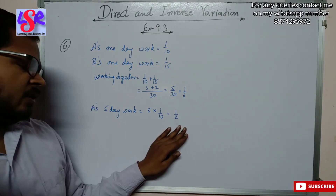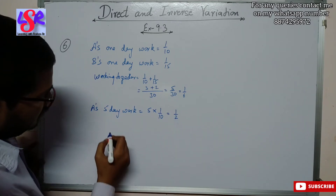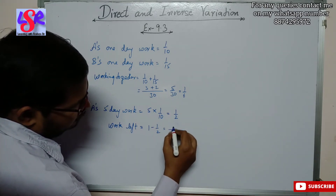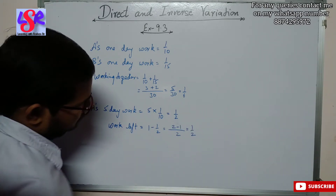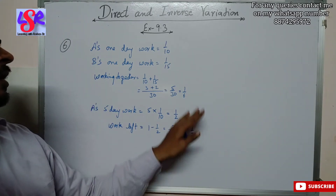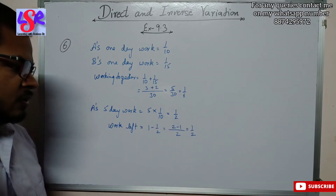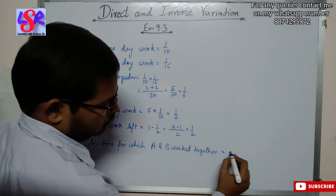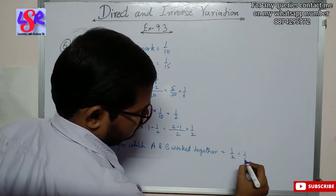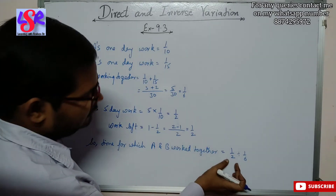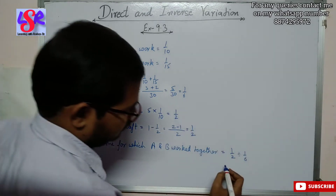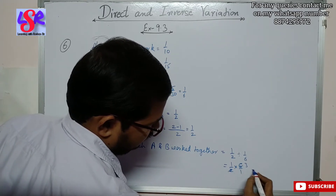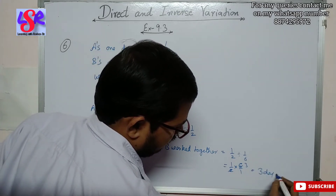So the work left equals 1 minus 1 upon 2. Taking LCM 2, that is 2 minus 1 equals 1 upon 2. Now this half of the work is completed by A and B together at an efficiency of 1 upon 6. So the time for which A and B worked together equals 1 upon 2 divided by 1 upon 6, which is 1 upon 2 into 6 upon 1. Cancelling by 3, we get 3 days as the answer.